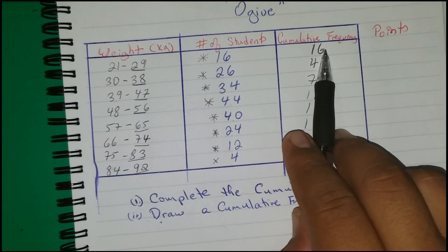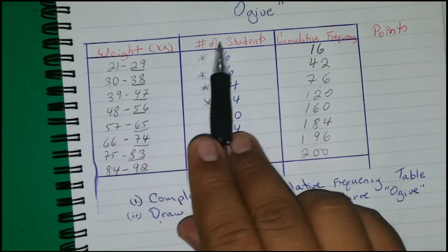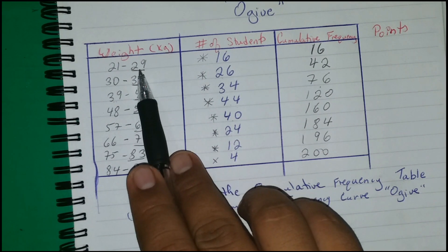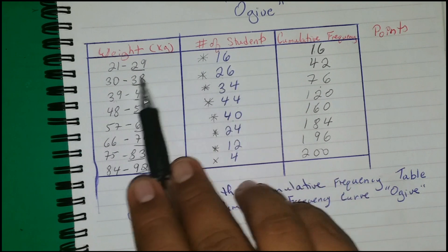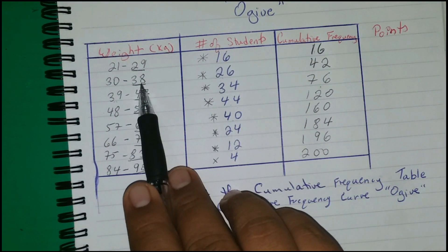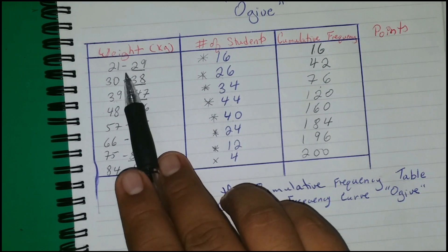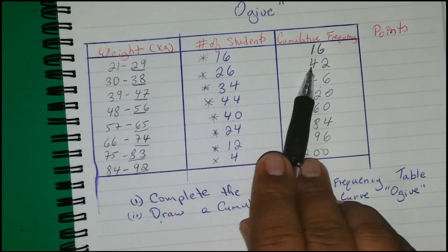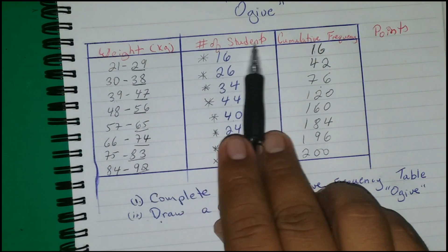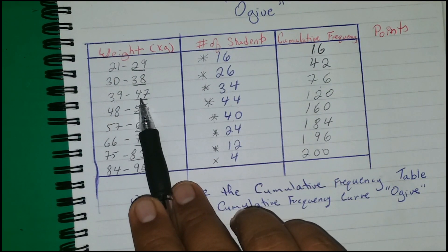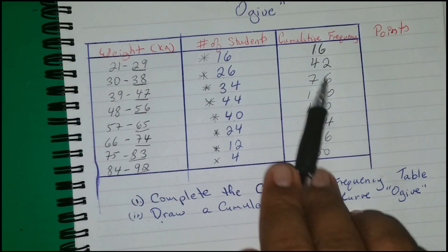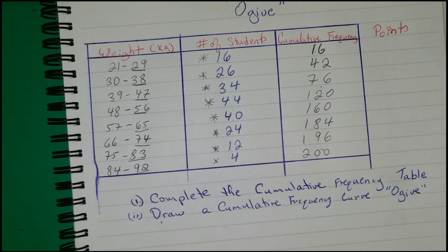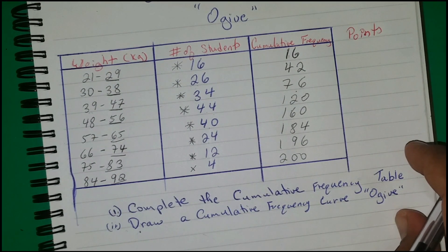So to summarize how we get the cumulative frequency: for 29 kilograms or less it's 16; for 38 or less it's 26 plus 16 giving 42; for 47 or less it's all three groups giving 76, and so on. That completes the cumulative frequency table.